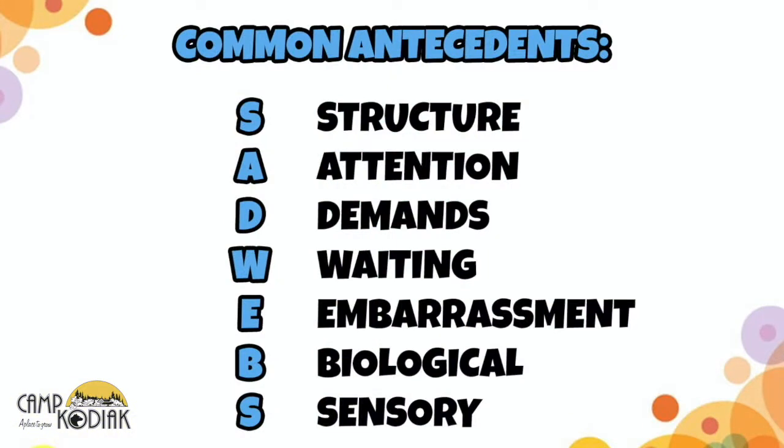To summarize, we take a look at antecedents to figure out what comes before a specific behavior, so we can figure out what might trigger a positive or negative reaction in a child. The seven common antecedents are SAD WEBS: structure, attention, demands, waiting, embarrassment, biological, and sensory. Thanks very much, and as always, please reach out if you have any questions. Bye-bye.